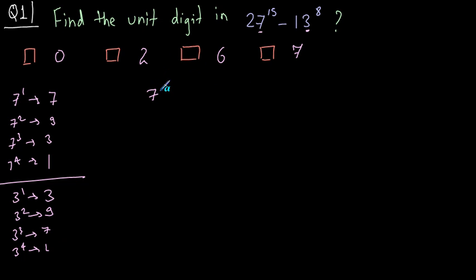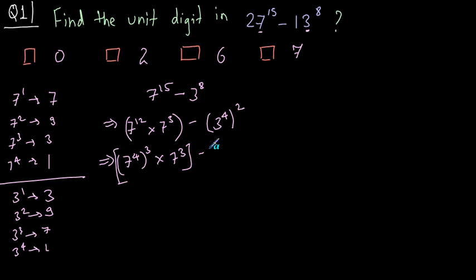Let's solve 7 raised to 15 minus 3 raised to 8. We are going to only take into account the units digits. 7 raised to 15 can be written as 7 raised to 12 into 7 raised to 3. 12 plus 3 is 15. Minus 3 raised to 8 can be written as 3 raised to 4 raised to 2. 7 raised to 12 can be written as 7 raised to 4, because 7 raised to 4 is 1, raised to 3, 3 times 4 is 12, into 7 raised to 3. And 3 raised to 4 is 1, the units digit is 1, 1 squared.